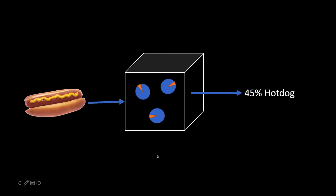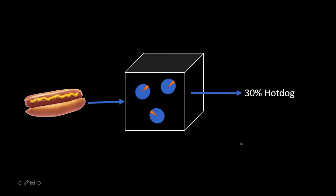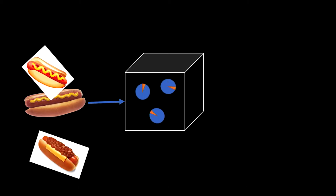In that very first untrained state, getting a number of 45% is just as likely as getting any other number. What happens is we say we know this is a hot dog, and we tell the algorithm to tweak these parameters just a little bit and see what happens. We tweak the parameters, run the hot dog through again, and it actually got worse. There's a set of mathematical feedback loops that say that wasn't a good optimization — go back to the previous one and try again. We spin the dials a different direction, run it through, and now you get a higher confidence. After doing this millions of times, you've set all the dials to a place where they can more reliably identify a hot dog.